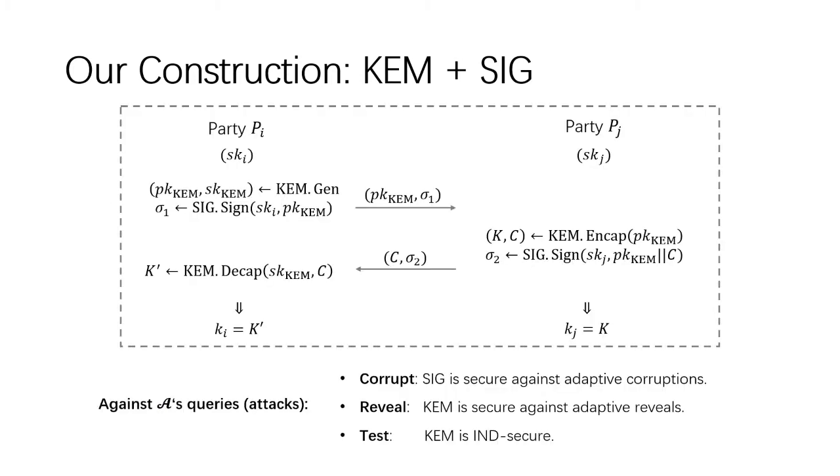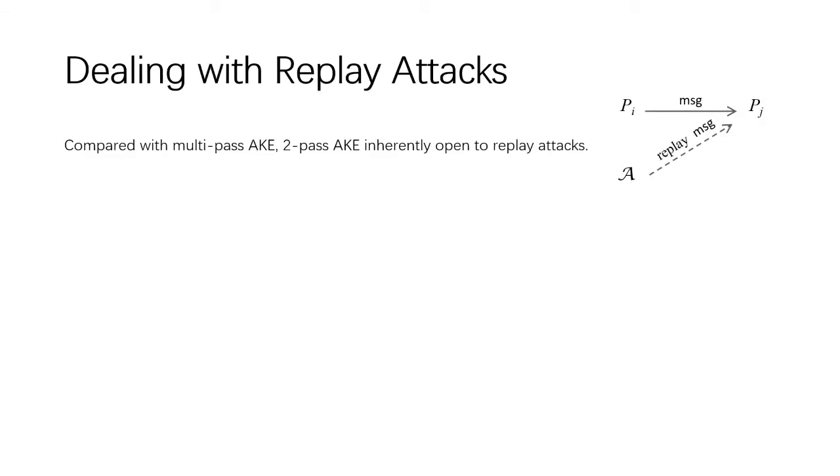This figure shows our construction from KEM and SIG. We can see that all queries from A in the security experiment of AKE, including corrupt and reveal queries, can be handled now. And A cannot distinguish the real session key from a random key in the test query, since KEM is IND secure.